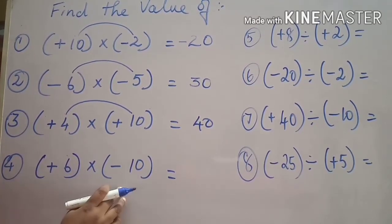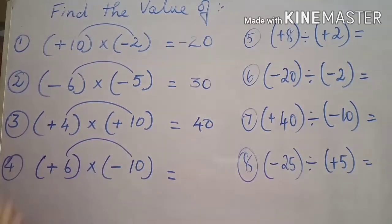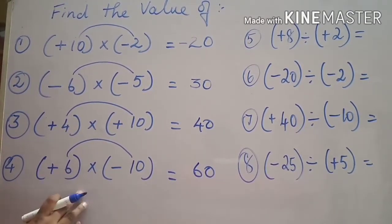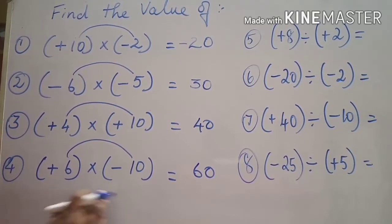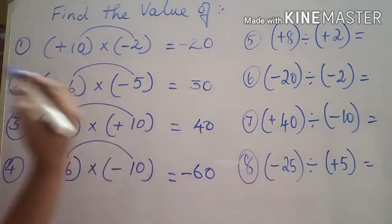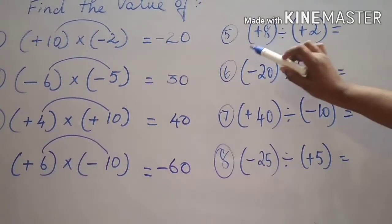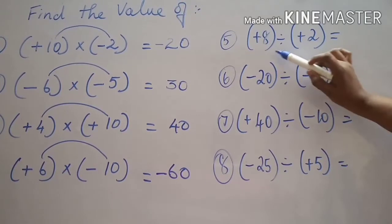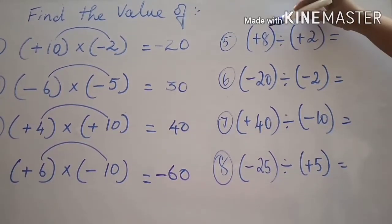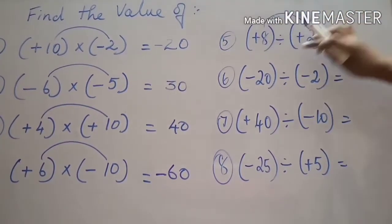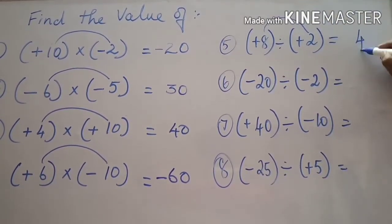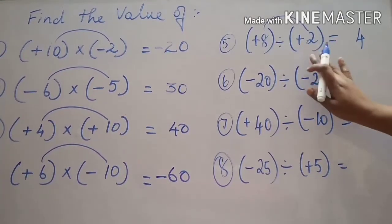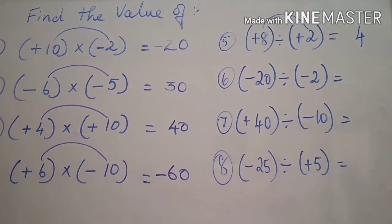Fourth sum: plus six into minus ten. Find the product first — six into ten is sixty. Positive into negative is different sign, so the answer is negative: minus sixty. Fifth sum: plus eight divided by plus two — this is division. Divide the numbers: eight divided by two is four. Both numbers are positive, same sign, so the answer is positive four.